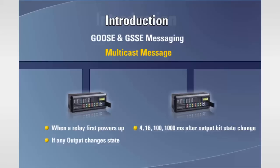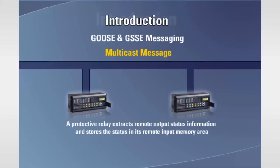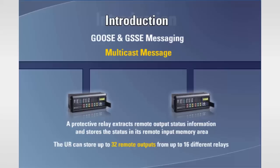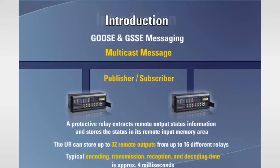Multicast messages are also broadcast on a user configurable periodic basis, which can be set for once every 1 to 60 seconds. A protective relay interested in remote output information from another relay will extract the appropriate remote output status information and store the status in its remote input memory area. The universal relays can store the status of up to 32 remote outputs from up to 16 different relays within local remote input status tables. This method of data exchange has sometimes been referred to as publisher-subscriber. The typical time taken for the encoding, transmission, reception, and decoding of a GSSE or GOOSE message between universal relays is typically in the quarter cycle time frame, or approximately 4 milliseconds.